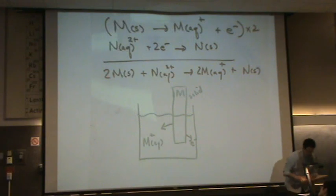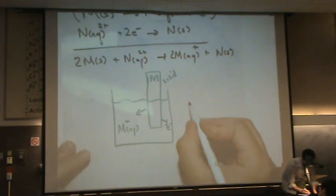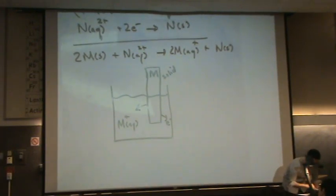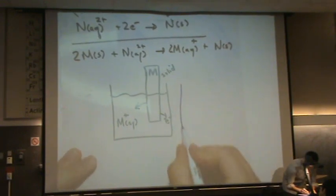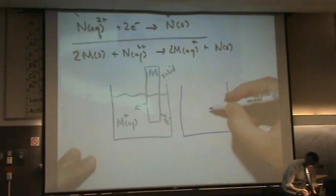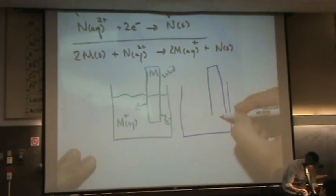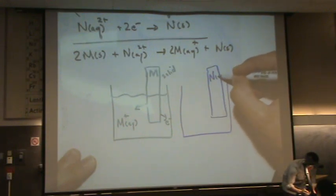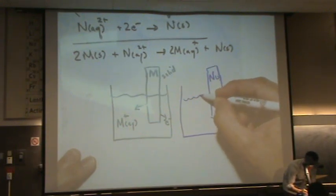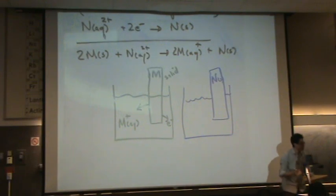And so what we're going to do, I'm also going to draw the other side of that diagram, the N part. Let me draw that right over here on the right. Let's put N solid, let's put a bar in a beaker, solid N.